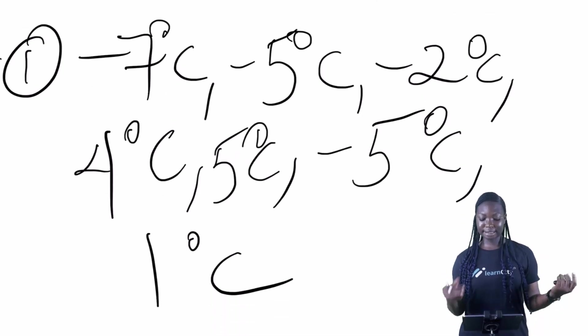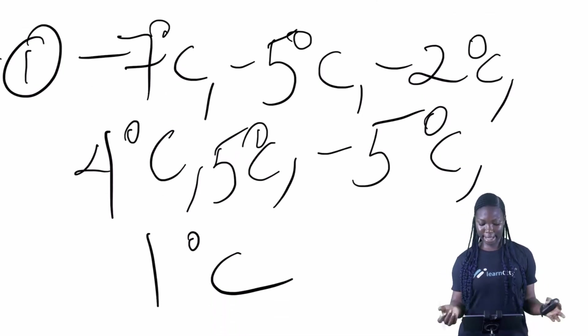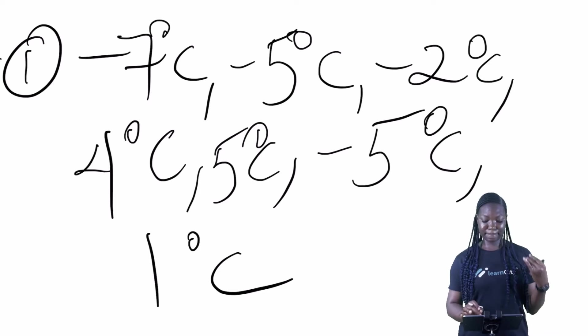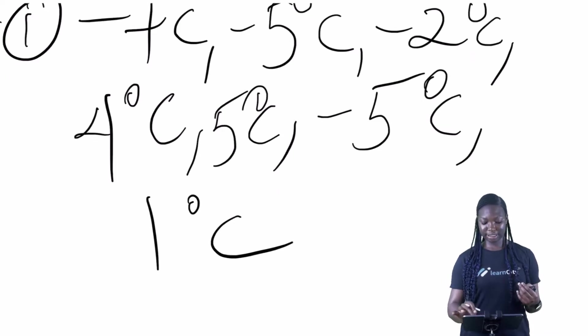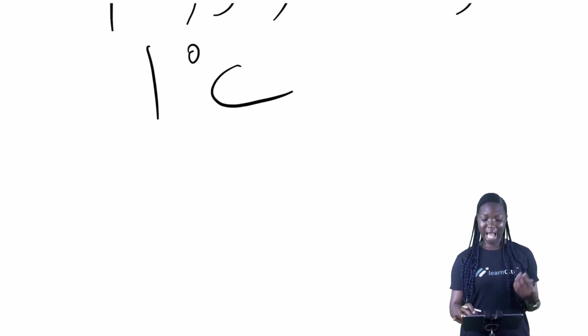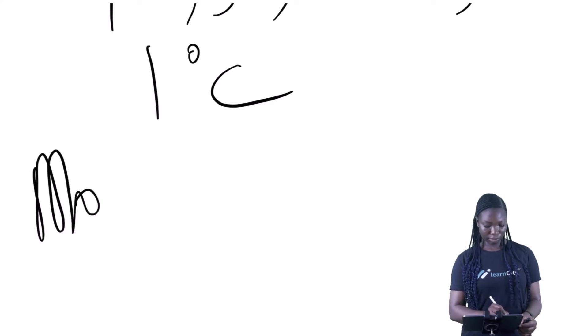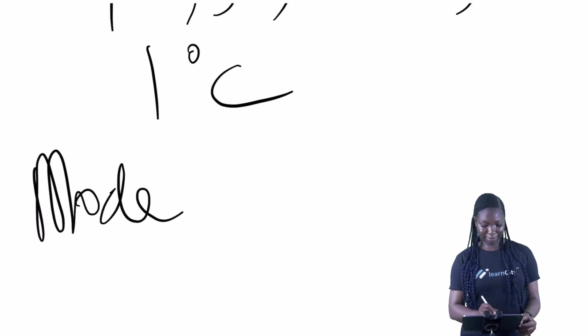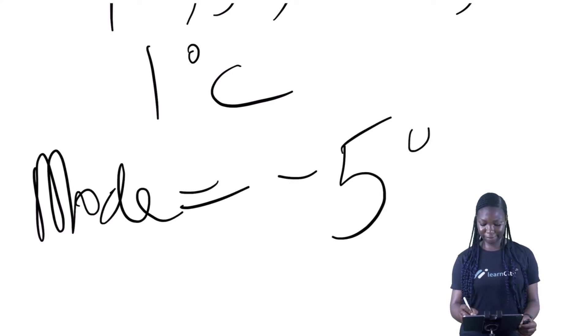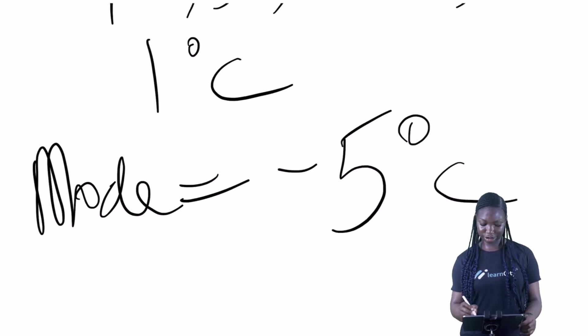Now, what is the mode here? The mode here is minus 5 degrees Celsius, and it's the one that occurred most. You have to find the minus 5 degrees Celsius.